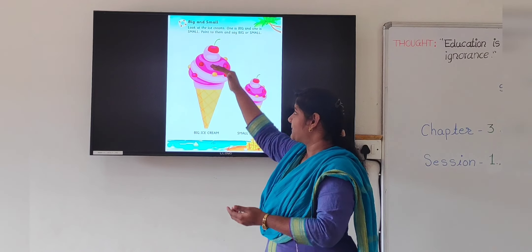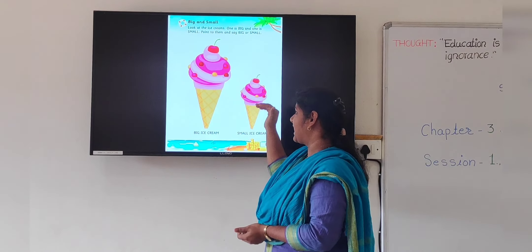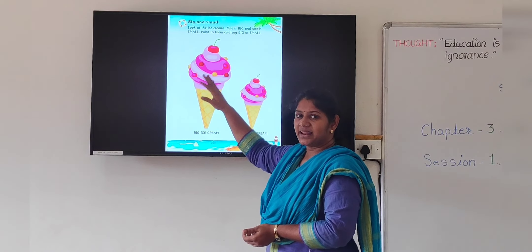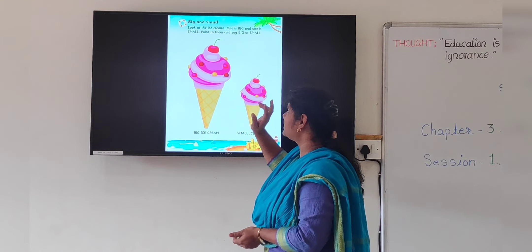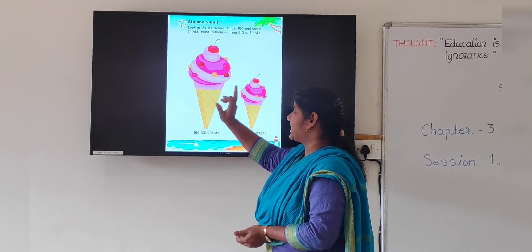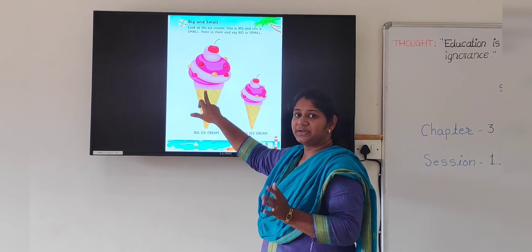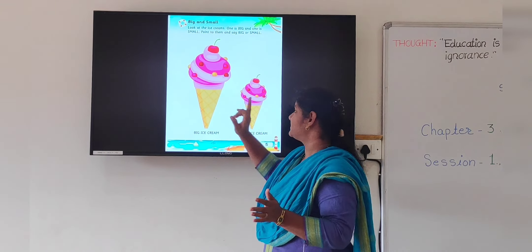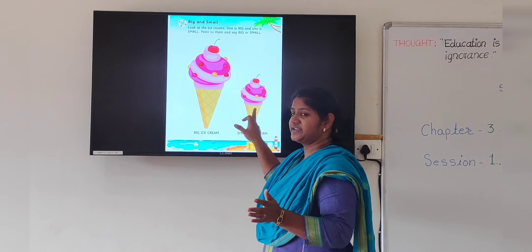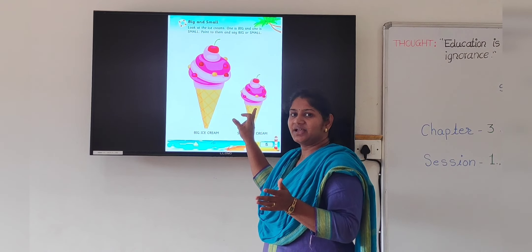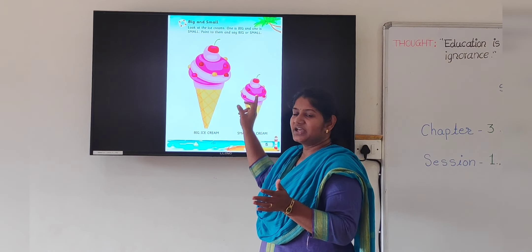Okay? Big and small. Now, like this, you have to point to them. This one is the big ice cream, and this one is the small ice cream. Okay?